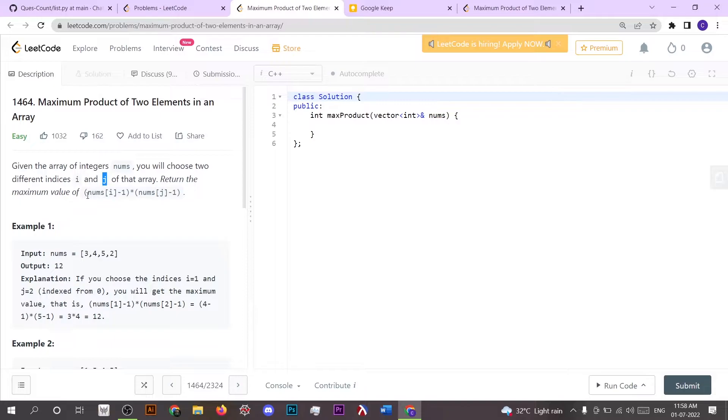We have to return nums[i] minus 1 times nums[j] minus 1, so we have to return this value.